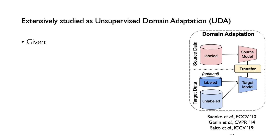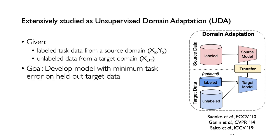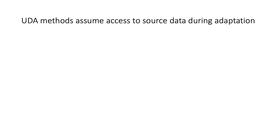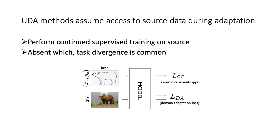This has been studied as unsupervised domain adaptation (UDA), where we have labeled source data, unlabeled target data, and the goal is to develop a model that generalizes to held-out target data. However, UDA methods assume access to source data during adaptation — they perform continued supervised training on the source while also performing domain alignment using source and target images. If source images are unavailable during adaptation, these methods frequently diverge from their task and don't perform well on the target.